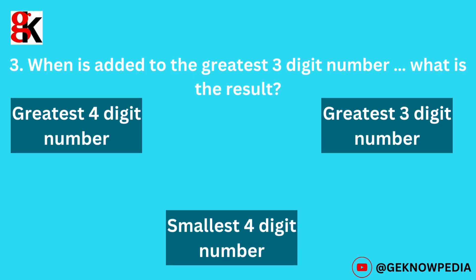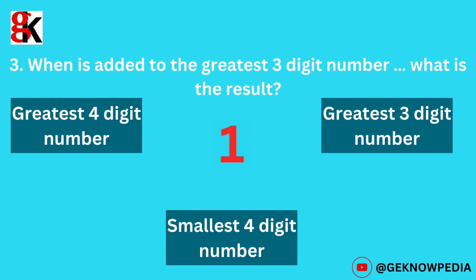Third question. When 1 is added to the greatest 3-digit number, what is the result? Options: greatest 4-digit number, greatest 3-digit number, smallest 4-digit number. The correct answer is smallest 4-digit number.